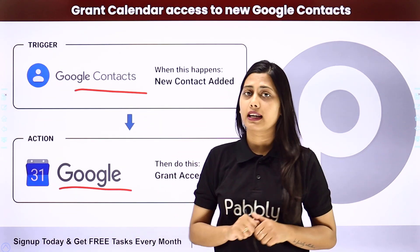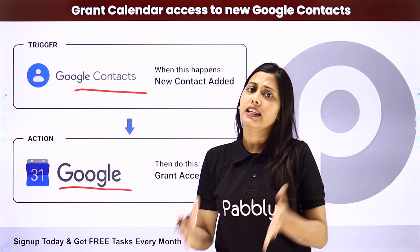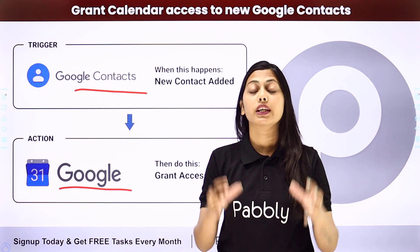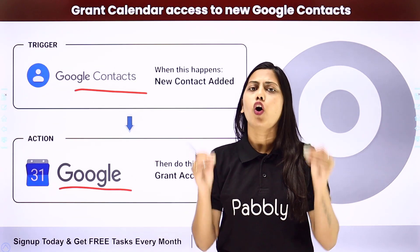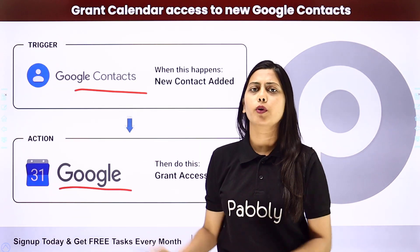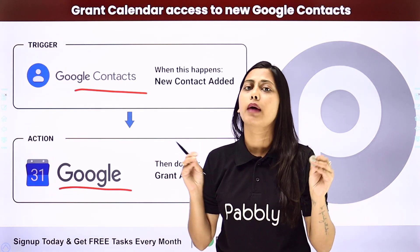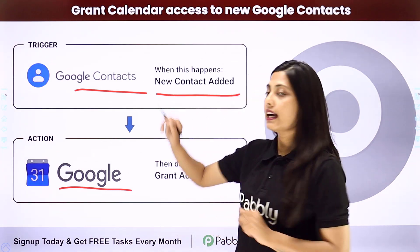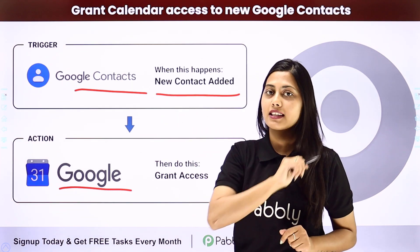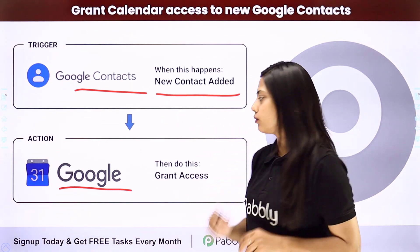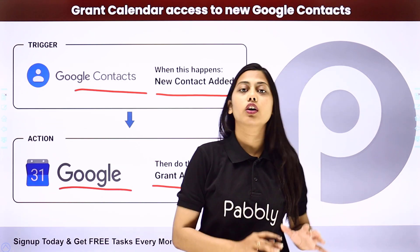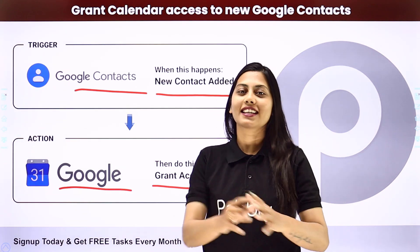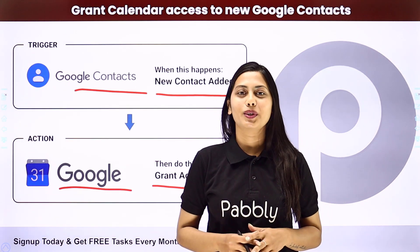So every time a new contact is added, it can't be shared to the Google Calendar as well. But we can actually automate this whole process with the help of Pabbly Connect, where our trigger will be new contact added in Google Contacts and our action will be granting access to that contact in your Google Calendar. Let us learn how to do it.